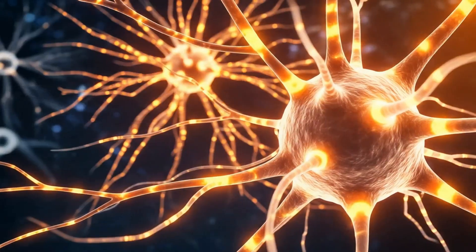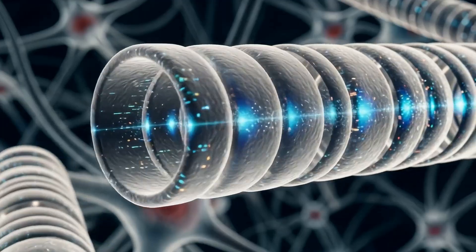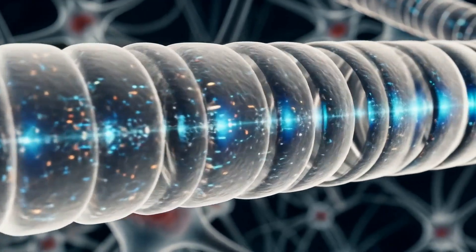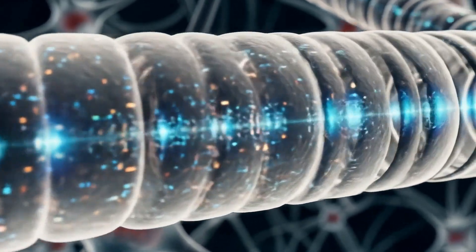Your microtubules, the quantum processes within your neurons, are tuned to this field. They read the angular frequencies of the universe, interpreting interference patterns as thought, memory and awareness.